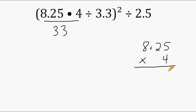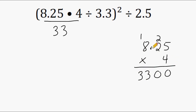4 times 5 is 20, so we write a 0 and carry the 2. 4 times 2 is 8 plus 2 is 10, so we put a 0 and carry the 1. 4 times 8 is 32 plus 1 is 33. Now if you have a decimal in the problem, you must have one in your answer. We have exactly two place values after the decimal, so we must also have two numbers after the decimal in the answer. Since both values are zeros after the decimal, we can get rid of those zeros and just express our answer as 33.